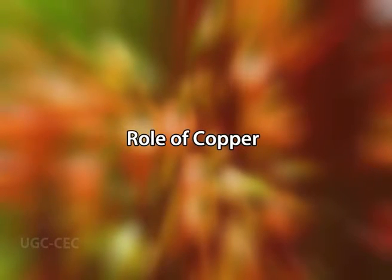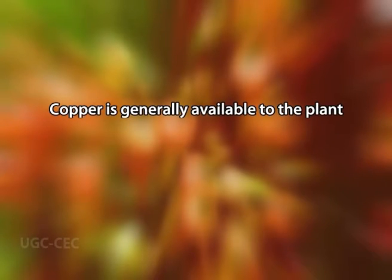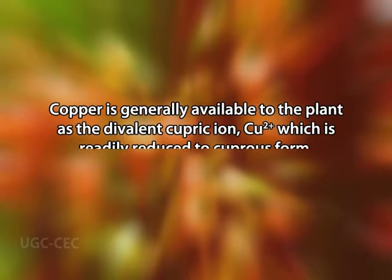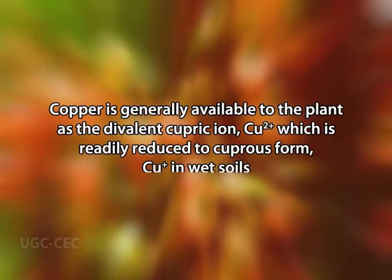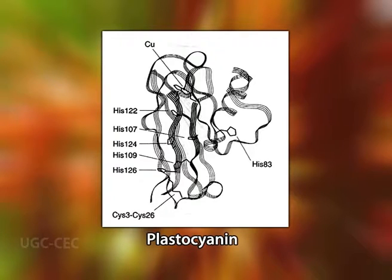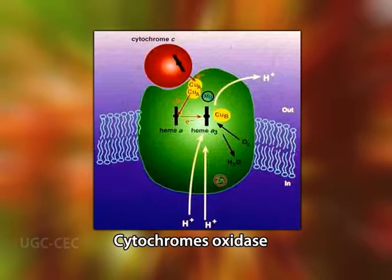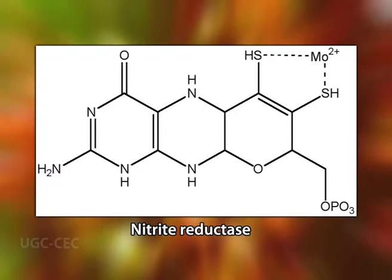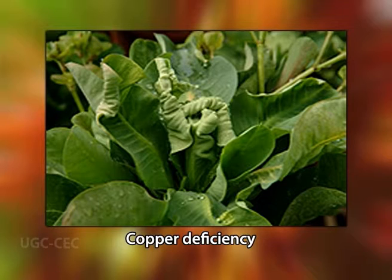In well-aerated soils, copper is generally available to the plant as the divalent cupric ion Cu²⁺, which is readily reduced to the cuprous form Cu⁺ in wet soils. As a plant nutrient, copper functions primarily as a cofactor for a variety of oxidative enzymes. These include the photosynthetic electron carrier plastocyanin, cytochrome oxidase — the final oxidase enzyme in mitochondrial respiration — and ascorbic acid oxidase. Copper is also involved in the activation of nitrite reductase, an important enzyme in nitrogen fixation.